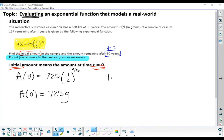We also need to calculate A of 80. That would be 725 multiplied by 1 half to the 80 over 30 power, which gives us 114.18. So if I round it to the nearest gram, that would be 114 grams.